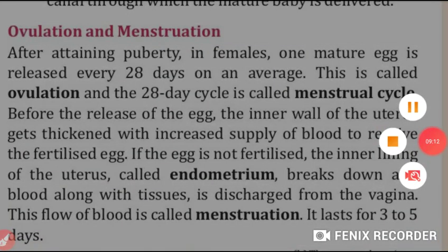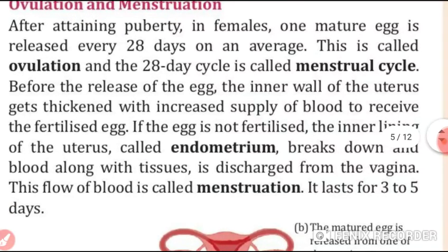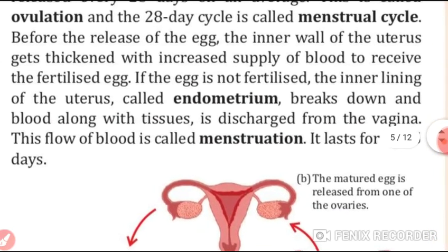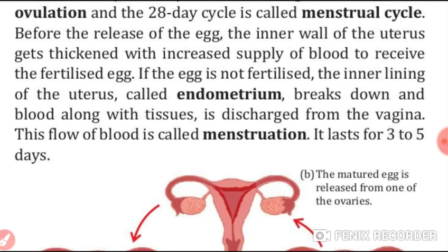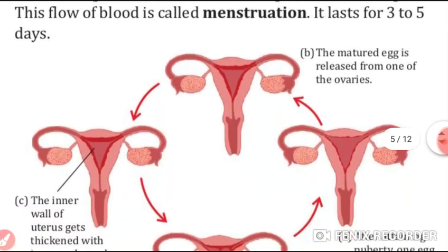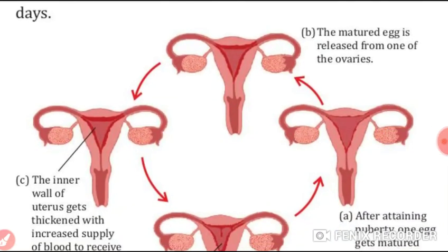Now, ovulation and menstruation. After attaining puberty in females, one mature egg is released every 28 days on average — this is called ovulation, and the 28-day cycle is known as the menstrual cycle. Before the release of the egg, the inner wall of the uterus gets thickened with an increased supply of blood to receive the fertilized egg. If the egg is not fertilized, the inner layer of the uterus — the endometrium — breaks down, and blood along with tissues is discharged from the vagina. This flow of blood is known as menstruation and it lasts for three to five days.